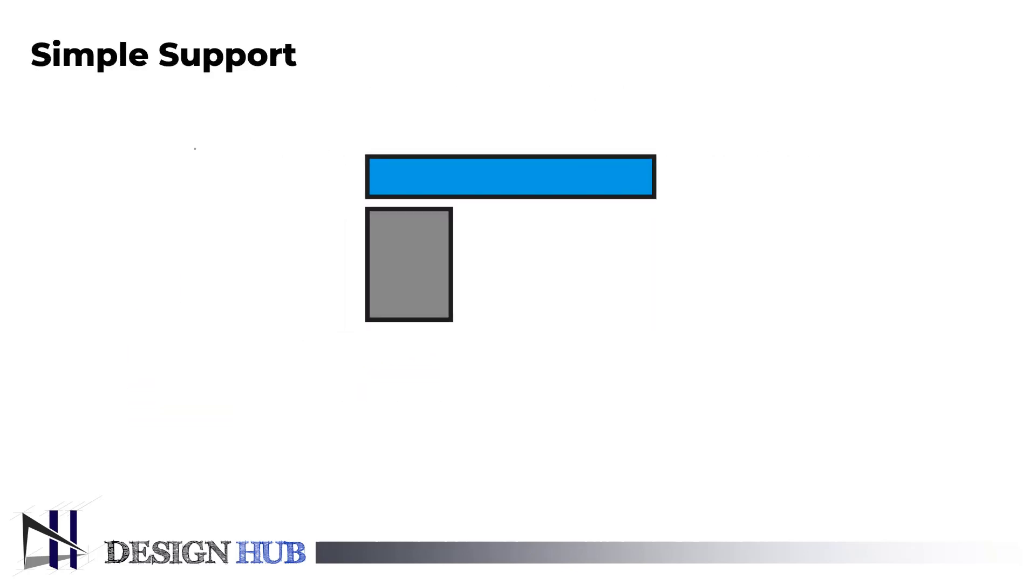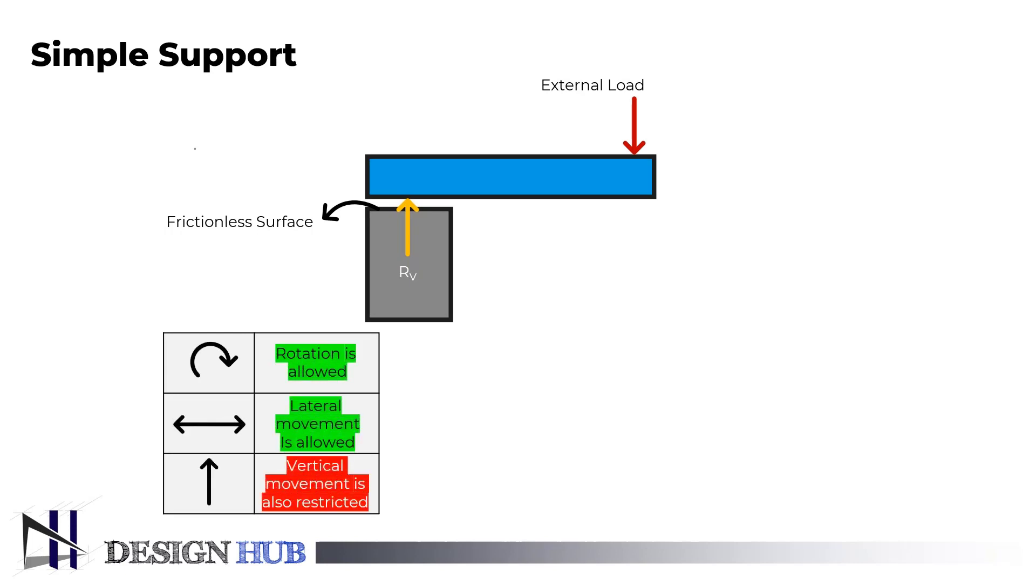Let's start with a simple support. The structural member is merely supported in this support by an external, frictionless surface. While this type of support permits rotation and horizontal motion, it does not permit vertical motion. Because of this, it only generates one reaction to the applied force, which is perpendicular to and away from the surface. According to Newton's third law of motion, the ground responds by exerting an equal and opposite force. This force is referred to as reaction.